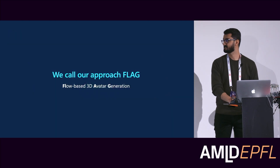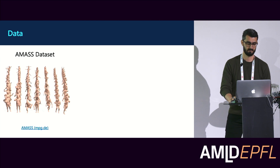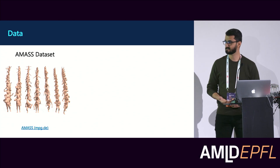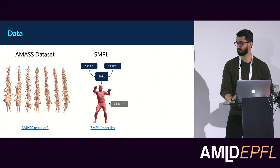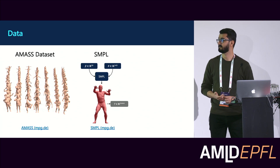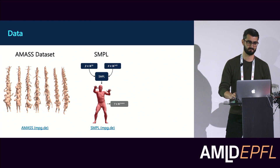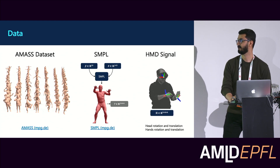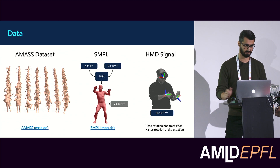We call our approach FLAG, for flow-based 3D avatar generation. Before jumping into the details, let's take a look at the data. To train and evaluate the model, we use the AMASS dataset, which is a large collection of human captures in different poses, body shapes, and genders. Each human is represented with SMPL, a differentiable parametric generative model of human body mesh, which takes shape parameters beta and pose in axis-angle representation theta, and provides the mesh of the body — from which we can derive global transformation matrices of different joints. We also have the HMD signal: head location and orientation as well as hand location and orientation whenever they are in the field of view of the camera.